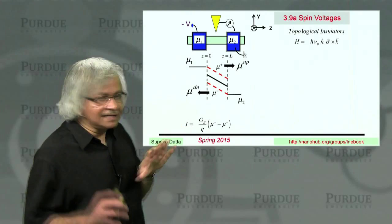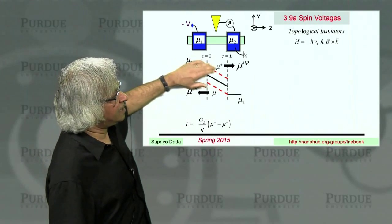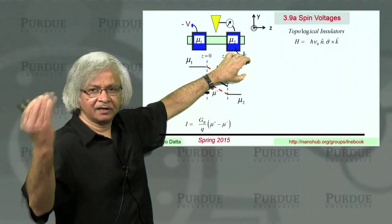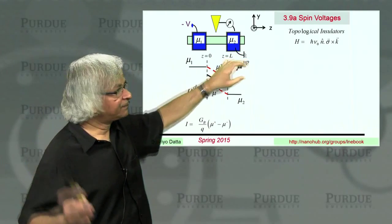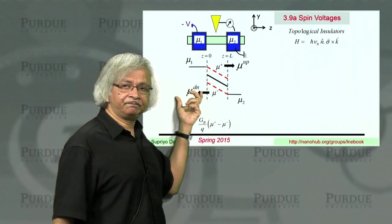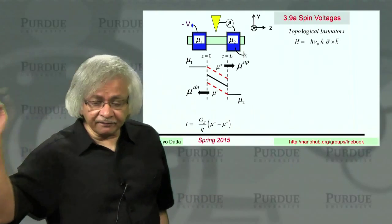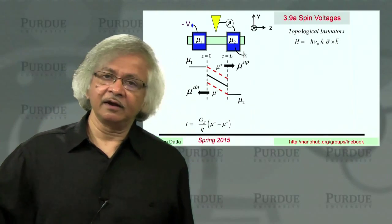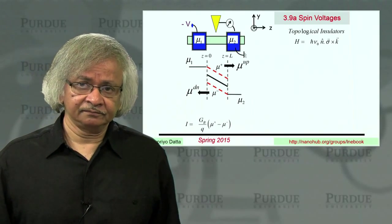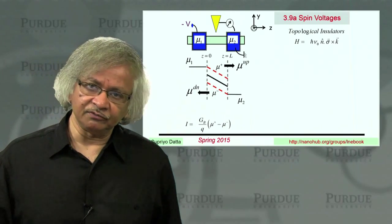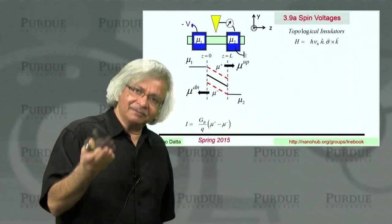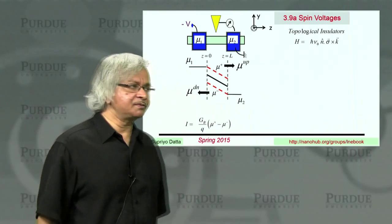In other words, in these materials, a state moving to the right also has a spin in a particular direction, this upspin, and states moving to the left have a spin in the downspin. And that's, of course, very different from normal materials where a state moving to the right could have either upspin or downspin. And same true of states moving to the left. Here, you have the spin momentum locking. A particular momentum implies a particular direction of spin.